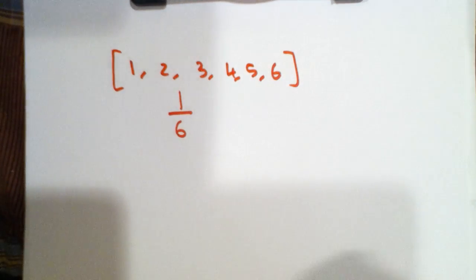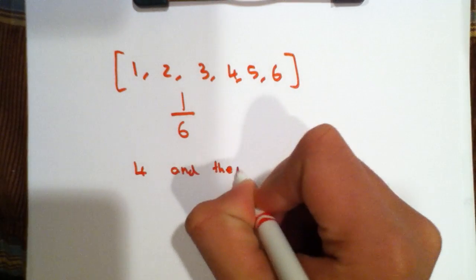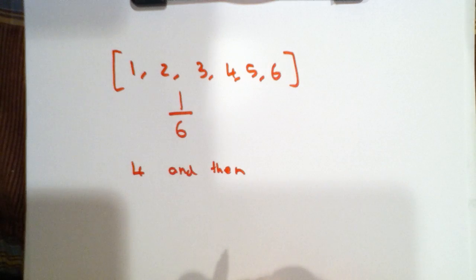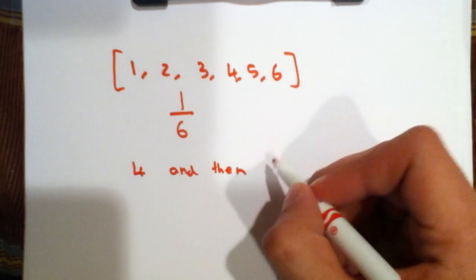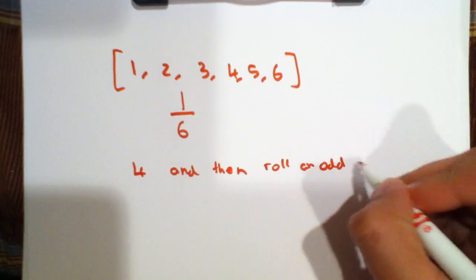Now what is the probability that you will roll a 4 and then roll an odd number?